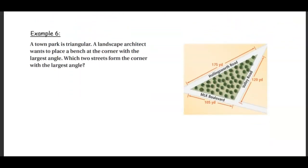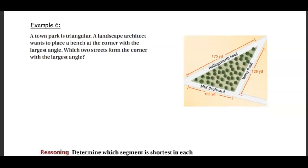A town park is triangular. A landscape architect wants to place a bench at the corner with the largest angle. We have to find the largest side — and this is the largest side — so that is the largest angle. The two streets that form that angle are Martin Luther King Boulevard and Valley Road.